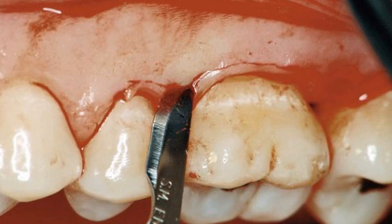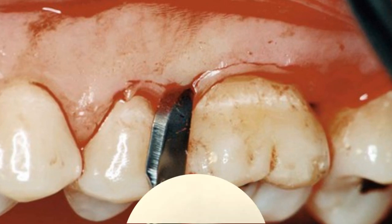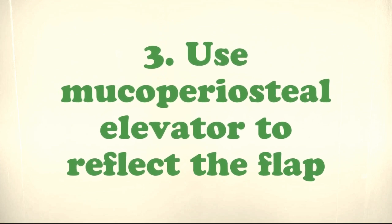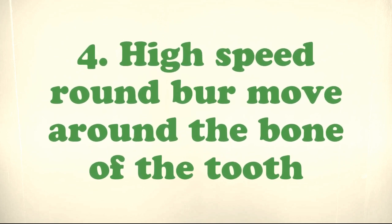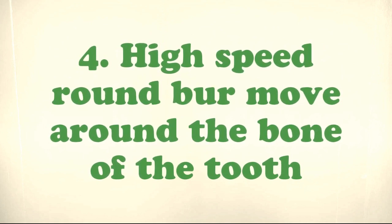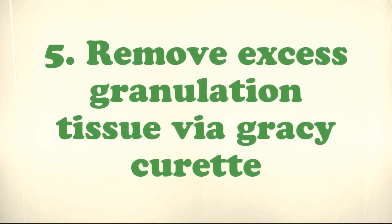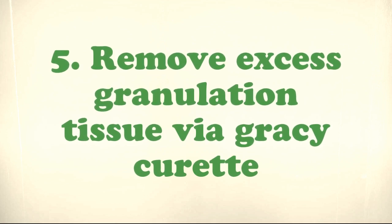After completing the incision, you need to raise a flap in order to expose the bone. Use a mucoperiosteal elevator to reflect the flap and expose the bone. Once the bone is exposed, use a high-speed round bur and move it around the bone of the tooth to remove a small amount of bone. Then remove the excess granulation tissue using a grey curette.